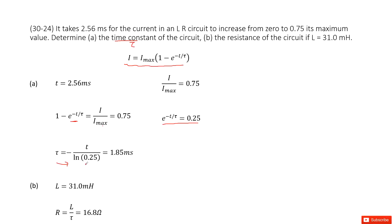Now we can solve for tau. Inputting t, we get tau equals 1.85 milliseconds.